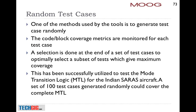One of the methods you can use is to generate random test cases. This is the simplest way of doing things — just generate some random waveform, inject it into your requirements, inject the same inputs into your code, and look at the coverage metrics. If both are matching, then you have done a fantastic test. Random test cases are the easiest way of optimizing test cases.